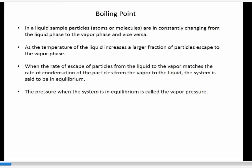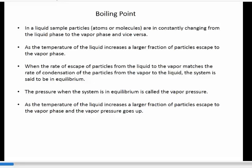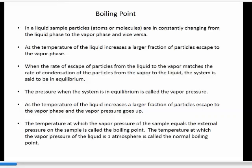When the rate of escape of the particles from the liquid to the vapor matches the rate of condensation from the vapor to the liquid, we've come to what we call a state of equilibrium. The vapor pressure will vary with temperature. A normal boiling point is a temperature at which the vapor pressure of material equals one atmosphere.